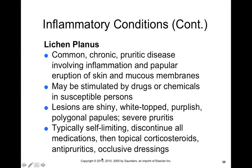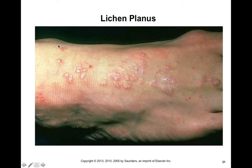Lichen planus is a common chronic periodic disease involving inflammation and popular eruption of the skin and mucous membranes. It can be stimulated by drugs or chemicals — we think of it as being one of those drug eruptions or from chemical exposure from cleaning products. Lesions can be shiny, white-topped, and purplish; they're also polygonal and typically very itchy. They are usually self-limiting and you want to discontinue all medications or chemicals that may be causing lichen planus. Topical corticosteroids and antipruritic drugs can help reduce the inflammation. This slide shows lichen planus — small silvery papules on the distal extremities. You can see regions where the skin has been broken probably by excessive itching — those would be secondary lesions, so you have to differentiate between the primary versus secondary lesions to figure out what you're looking at.